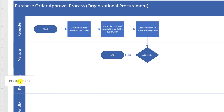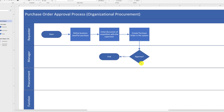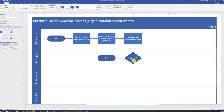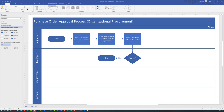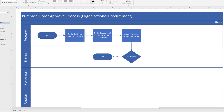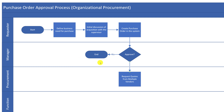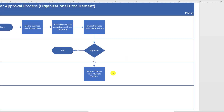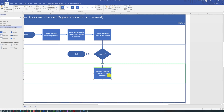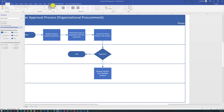Typically, the procurement department starts their process by requesting quotes from multiple vendors. To reflect this, we need to add a process step in the procurement Swimlane, add a title to the process box, and connect the shapes using the connector. We also want to reflect that this happens after the manager approves the original request. Procurement is also responsible for selecting the vendor, which we can reflect as a separate shape in the procurement Swimlane.